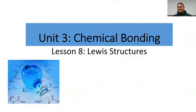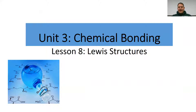Lesson 8: Lewis Structures, or Lewis Dot Structures. We have already talked about Lewis symbols and how to draw a Lewis symbol for an element. Now what we're going to do is learn how to draw Lewis Dot Structures, and essentially a Lewis structure shows us how atoms are connected to one another through covalent bonding.